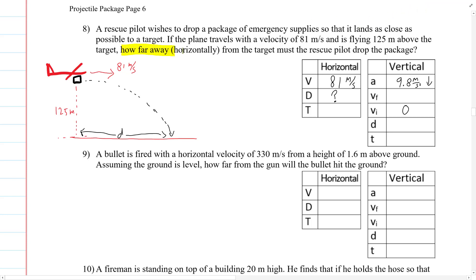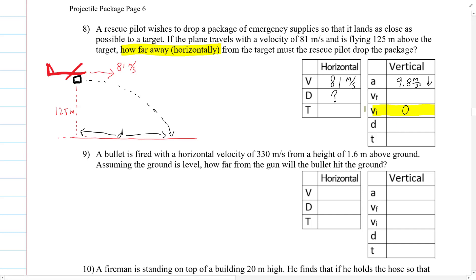How far away horizontally — the plane is traveling with that velocity. It doesn't explicitly say he's flying level, so let's make that assumption, because that's what we want. And the distance vertically is 125 meters down.